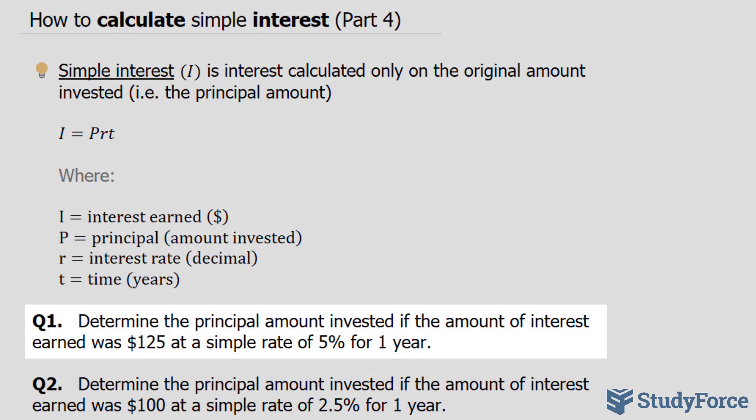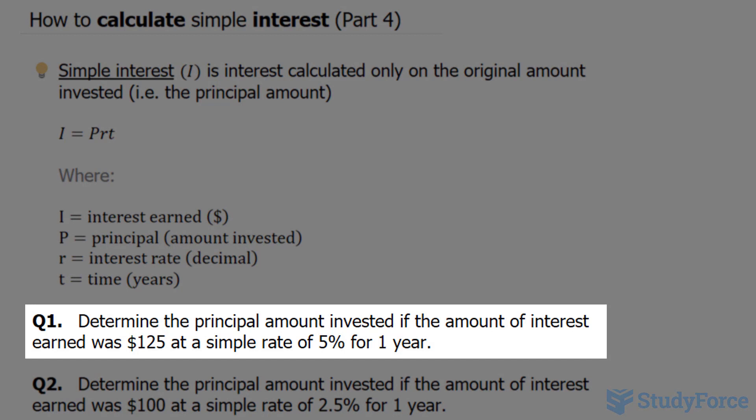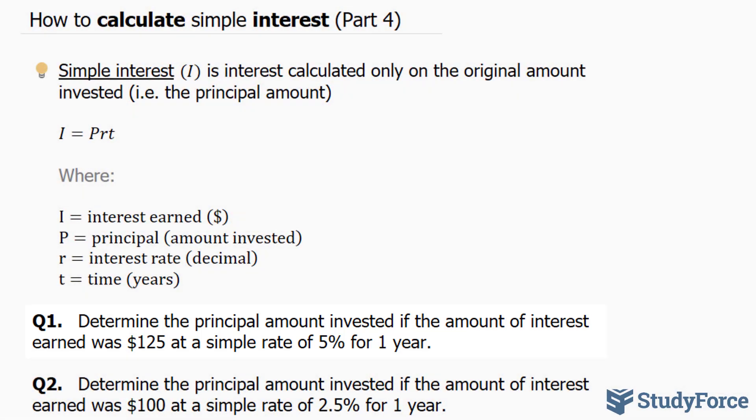The question reads, determine the principal amount invested if the amount of interest earned was $125 at a simple rate of 5% for one year. So in our case here, they want us to find the principal. This is the first time where we are not looking for the interest earned, as we did in parts 1 through 3.